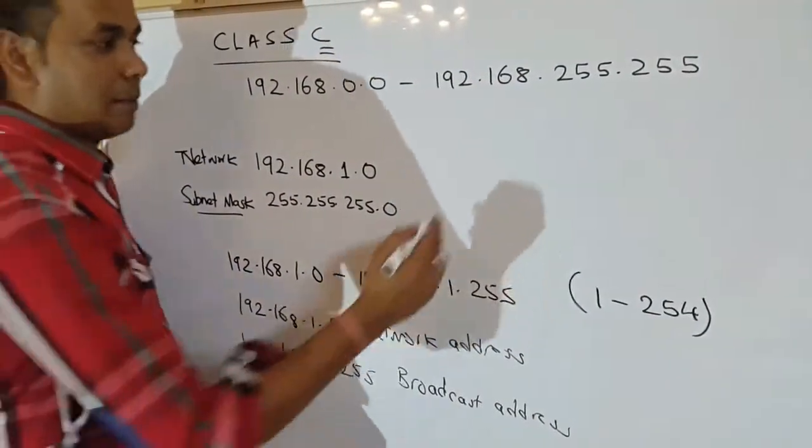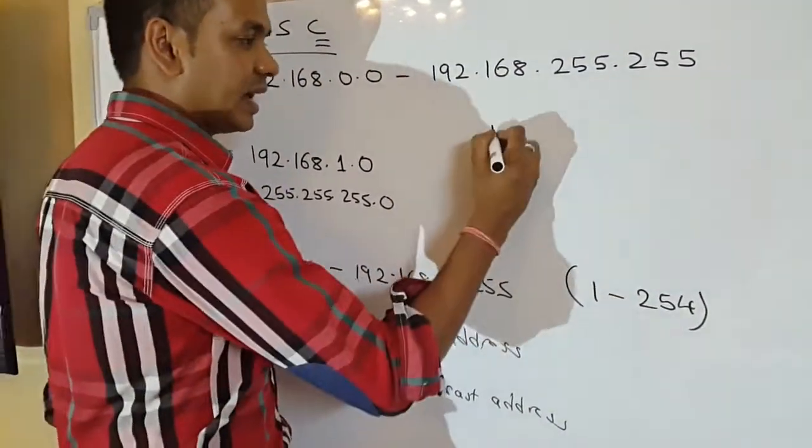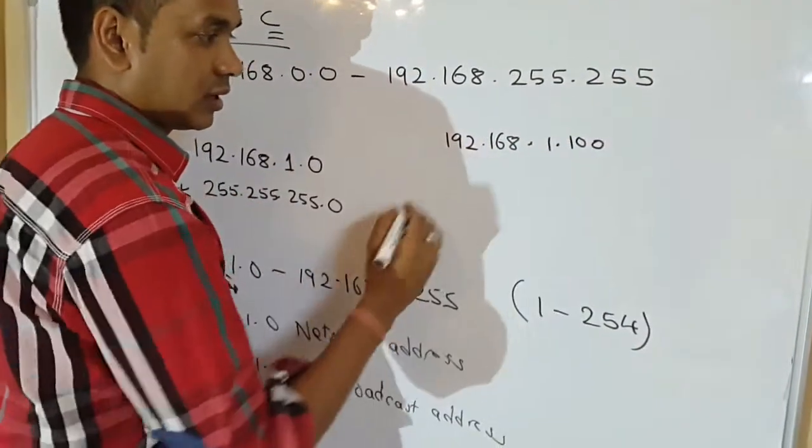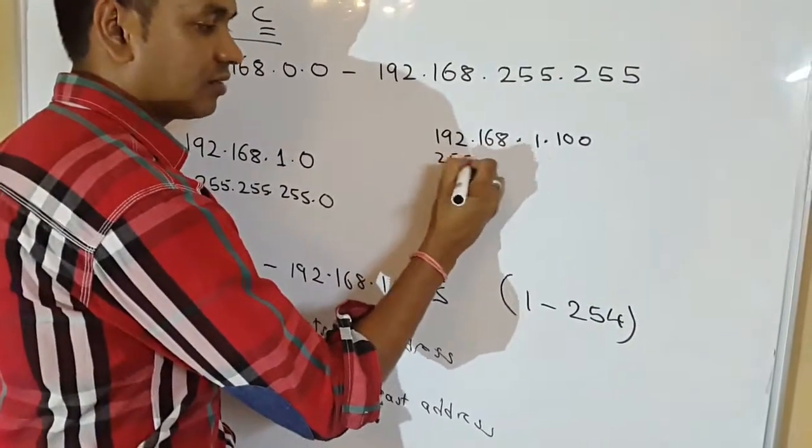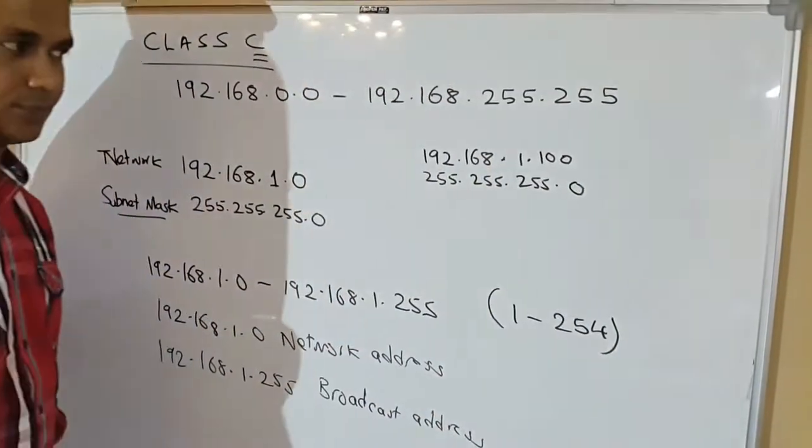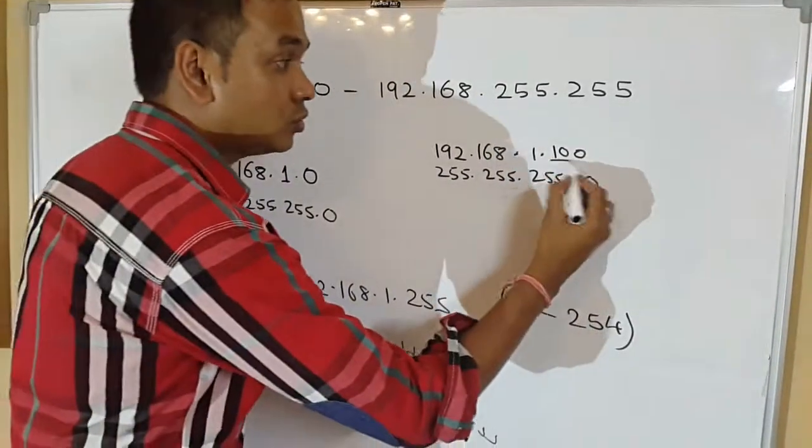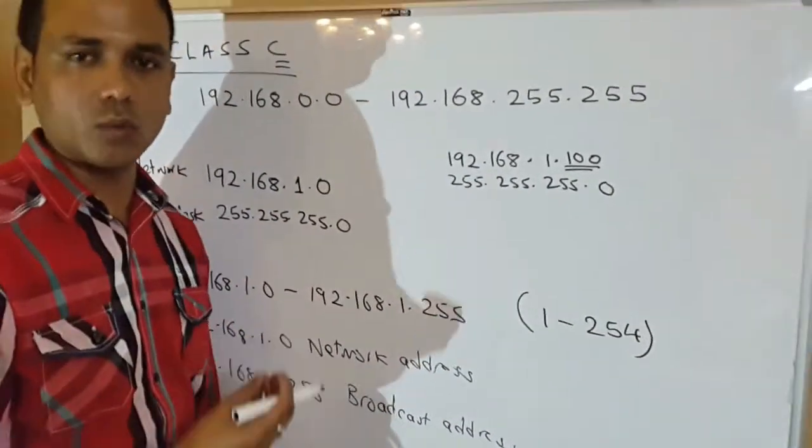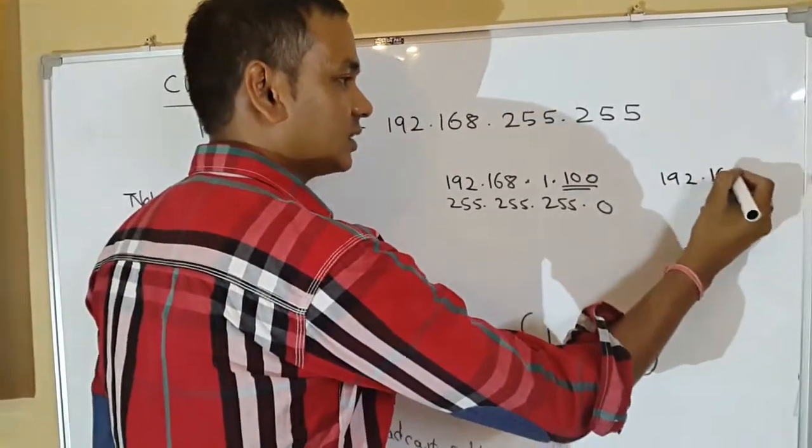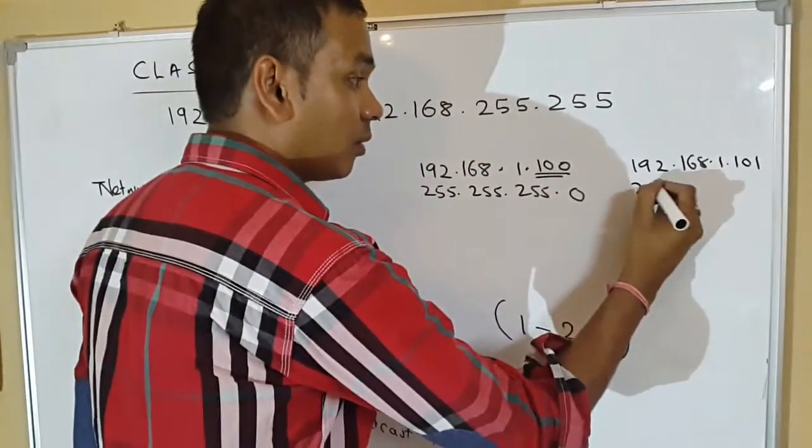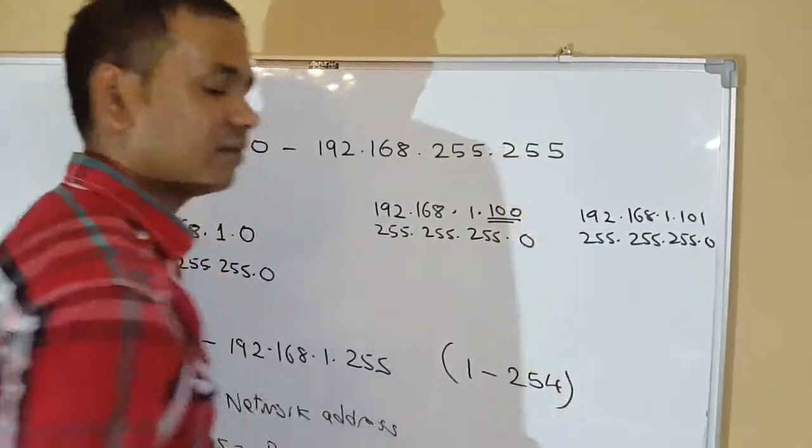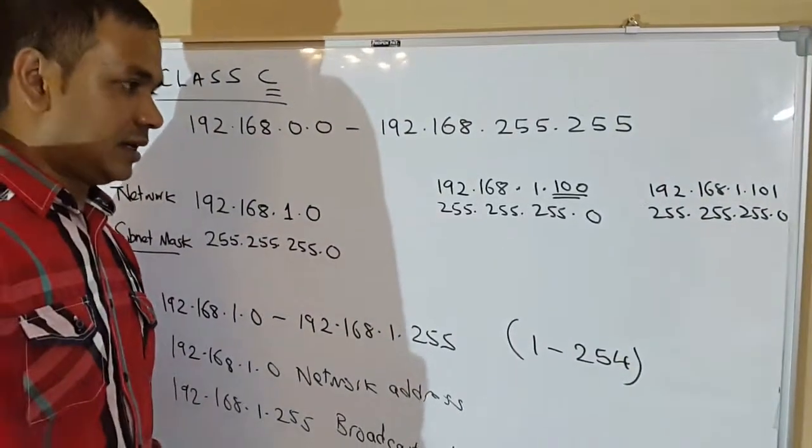For example, on my PC, I can put an IP address of 192.168.1.100. On my second PC, I can't use the same IP address because IP addresses on a network need to be unique. So, the next IP that I can use is 192.168.1.101. The subnet mask is always the same: 255.255.255.0.